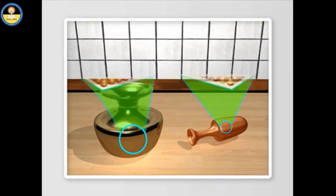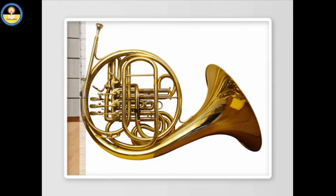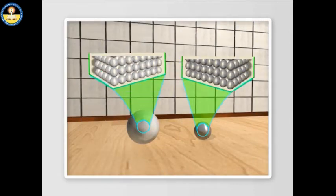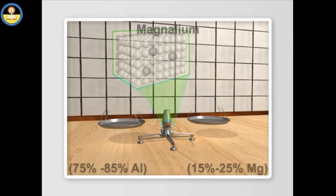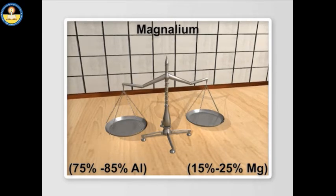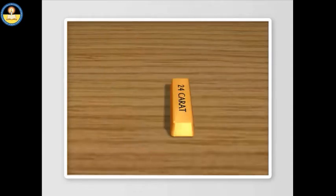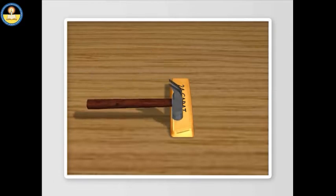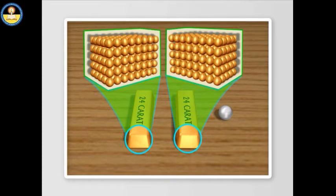An alloy is a combination of a metal with another substance so as to improve the properties of the base metal. For example, magnelium is formed by 75% to 85% aluminium and 15% to 25% magnesium. Metals also combine with non-metals to form alloys. Pure gold, i.e., 24 karat gold, is soft and weak. To make ornaments, its strength and hardness can be increased by making an alloy of 22 karat gold.